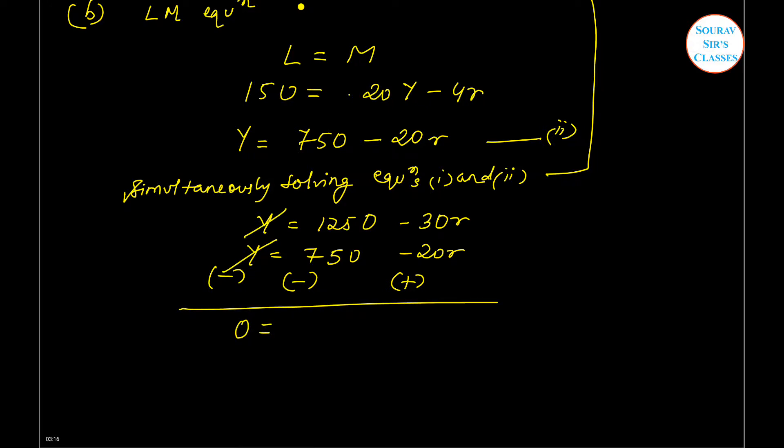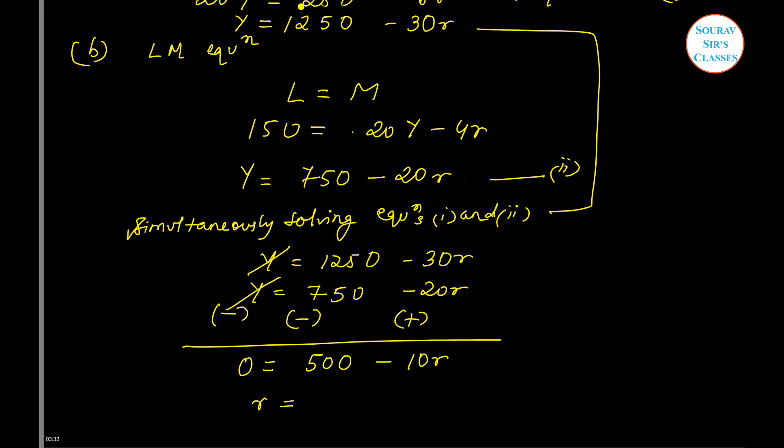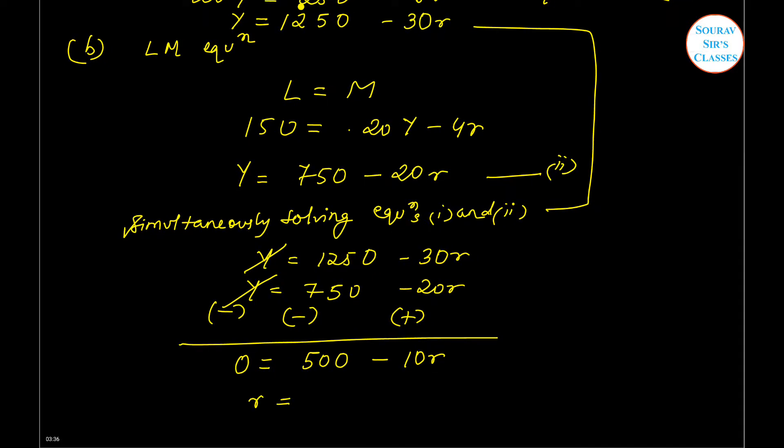It will be zero. This will be nothing but 500 minus 10r, or r will be... Okay, I need to make some alteration, because when this goes on that particular side it becomes plus. It changes to minus, so it ultimately becomes minus 50r. So r will be given as 10 percent.